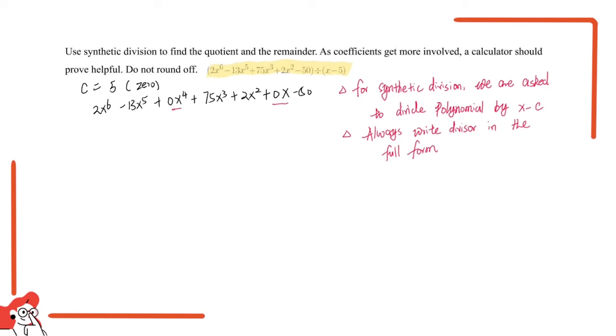Now we can dive into the question. First thing we do is write down the coefficients for the divisor, which are 2, -13, 0, 75, 2, 0, and -50. Then we draw something that looks like this. Then we put the zero on the left, which is 5 right here. After finishing all this, we can start the process.